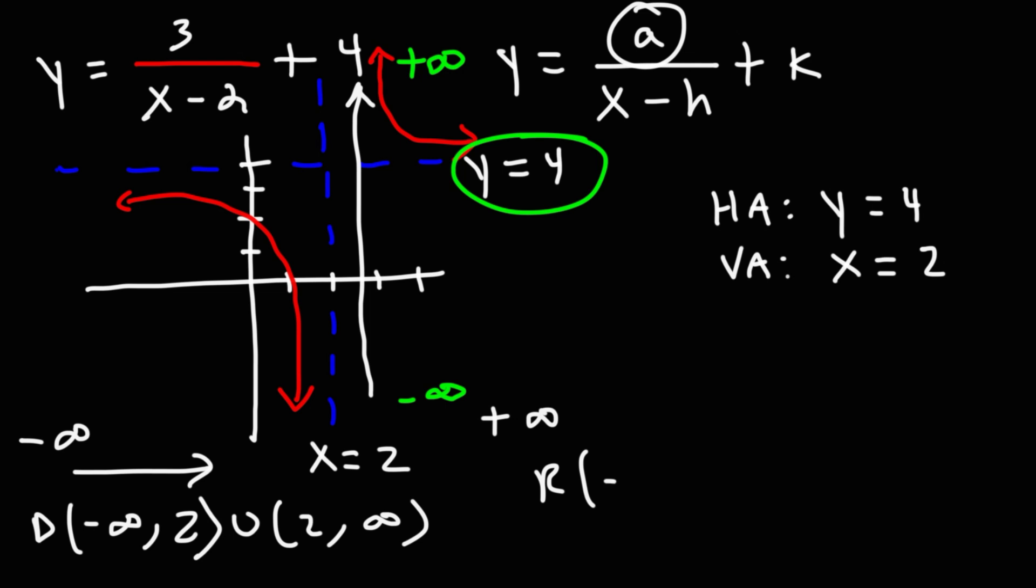So for the range, it's going to be from low to high, negative infinity to 4, union 4 to infinity.